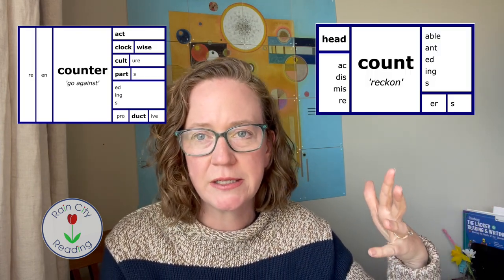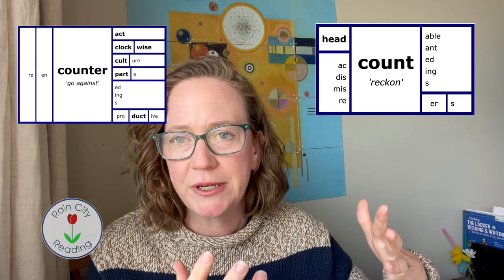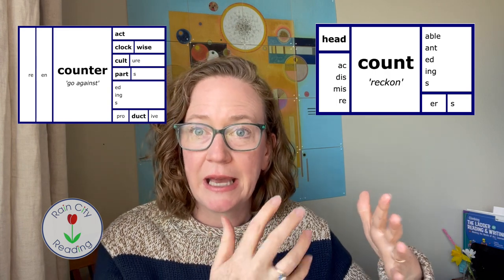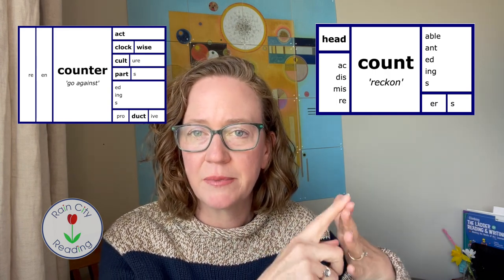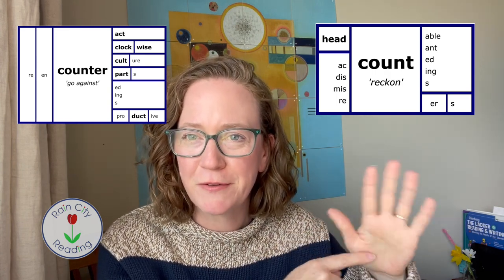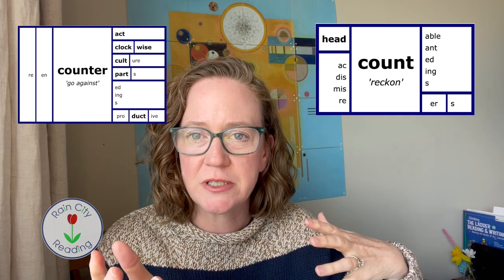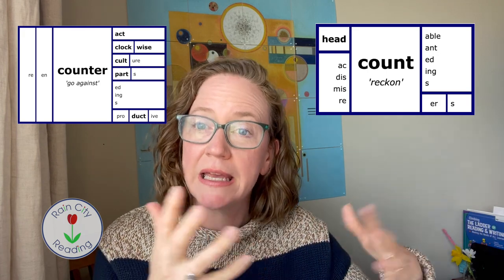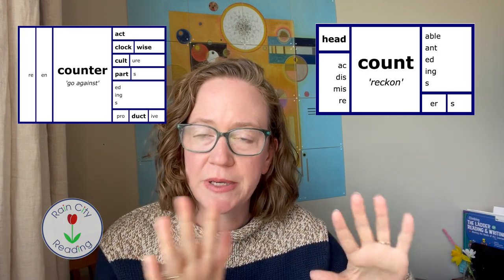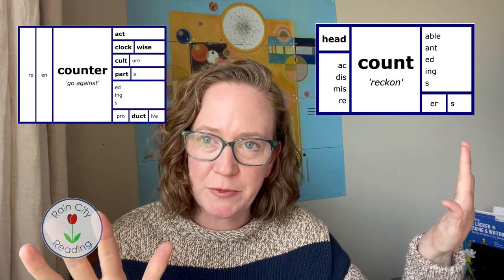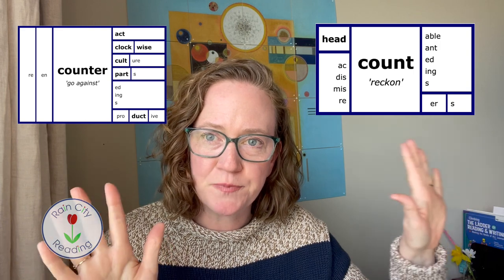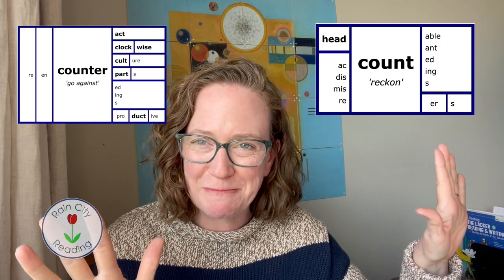Different meanings, different routes — not related. We need to examine them separately; they would not go into the same matrix. You would not put 'counting,' like counting the fingers on my hand, on the same matrix with 'encounter,' because they are coming from different places.